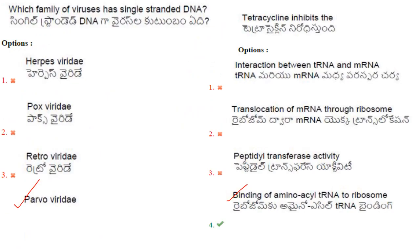Which family of viruses has single-stranded DNA? Herpesviridae have double-stranded DNA; Poxviridae also have double-stranded DNA; Retroviridae have RNA; and Parvoviridae have single-stranded DNA. So the answer is option 4: Parvoviridae.